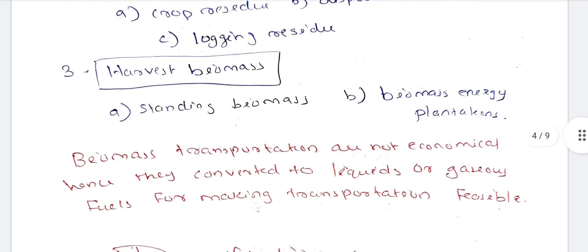Next, harvest biomass and standing biomass — we have a lot of crops. Biomass includes a lot of crops. We have to use biomass energy from plantations and biomass energy utilization plants. We have to use biomass sources including crops and plantations.